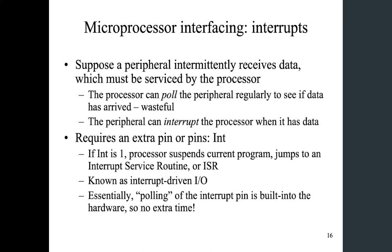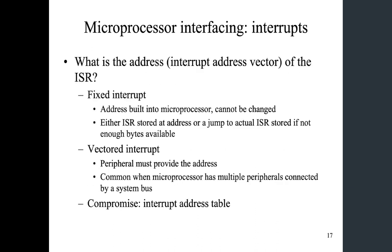Underneath, how this works is that the polling of the interrupt pin is built into the hardware. So instead of spending instructions to read the status bit of the peripheral, the processor itself has some built-in logic which will sense the voltage level at the interrupt pin. If it detects a pulse or a logic high on the interrupt pin, it will start the interruption process — suspending the current program and jumping to the ISR. As a result, the processor does not need to use instructions to check the status.